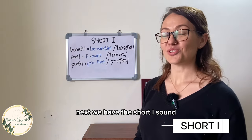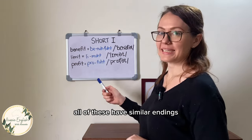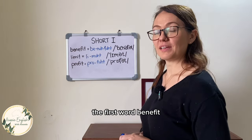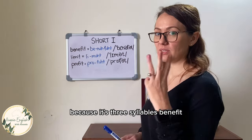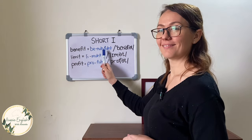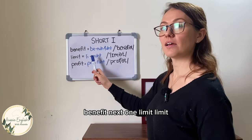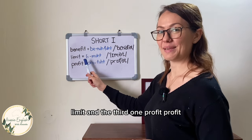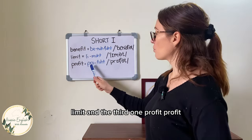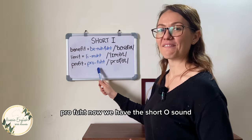Next we have the short I sound. All of these have similar endings and the schwa is at the end of all of them. The first word, 'benefit', actually has two schwa sounds because it's three syllables: ben-uh-fit. The next one is 'limit': lim-ut. And the third one is 'profit': prof-ut.